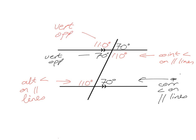Again, you could probably have just seen that 110 by just seeing adjacent angles on a straight line. Vertically opposite will give me that this is 70 here, and vertically opposite will give me that this here is 110. So these are all found using vertically opposite.